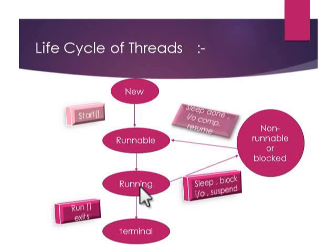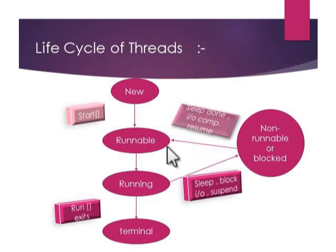In the running state, if any process needs an IO device, then this process will be blocked and go to the blocked state. After completing the IO operation, this process goes back to the runnable state and then to the running state. If the process does not need any IO device, then the run method is called and the process goes to the terminated state.